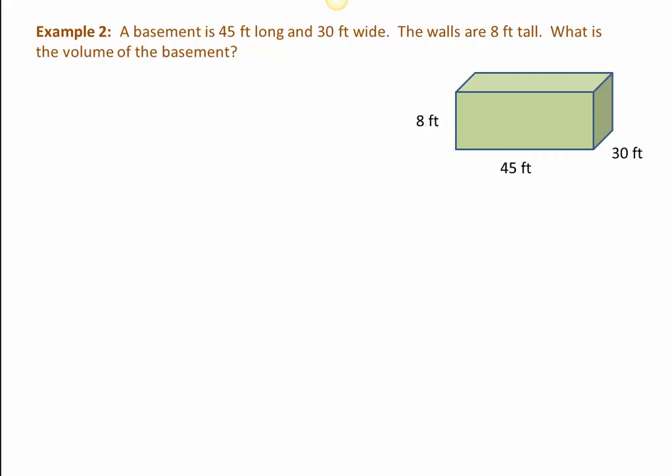We have 45 feet here, 30 feet in this direction, and 8 feet tall on the walls. Clearly this is not drawn to scale, but that's okay. For the volume of the basement, we would need to multiply the length times the width times the height. Writing the formula down every time you work is a good way to make sure that you will remember it later on. So we have 45 feet times 30 feet times 8 feet, and we just multiply.